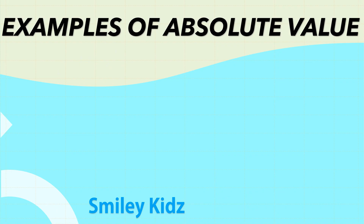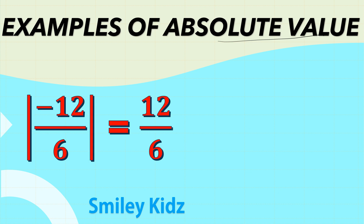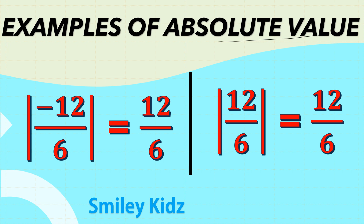Let's see examples of absolute value. The absolute value of minus twelve by six is the positive version of minus twelve by six, which is twelve by six. Next, the absolute value of twelve by six will be the positive version of twelve by six. Since twelve by six is already positive, the absolute value of twelve by six is twelve by six.